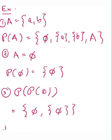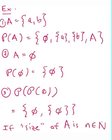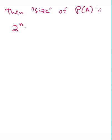So, in general, if the size, this is in air quotes because we haven't formally discussed this, so the size of A is n, a natural number, then the size of P of A is 2 to the n, and we'll discuss this more in depth in another video when we talk about cardinality.